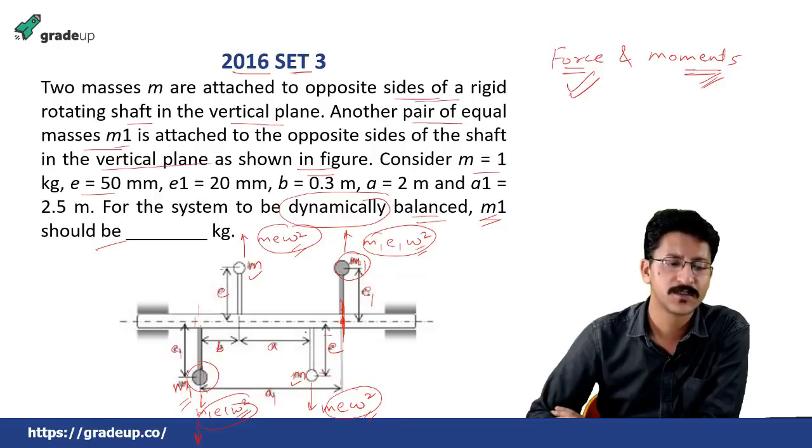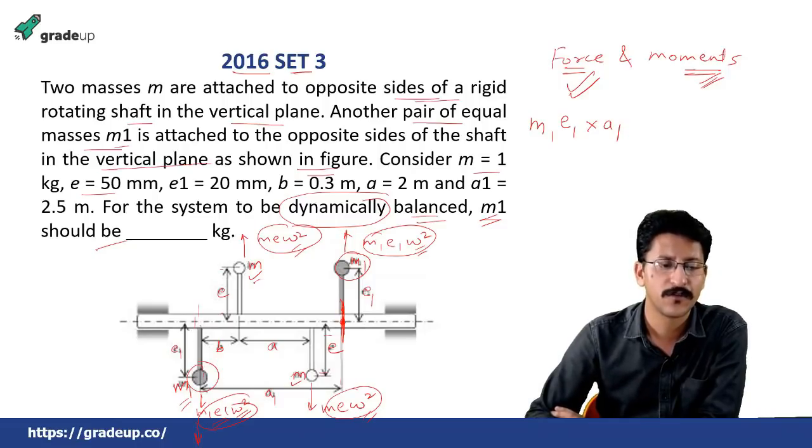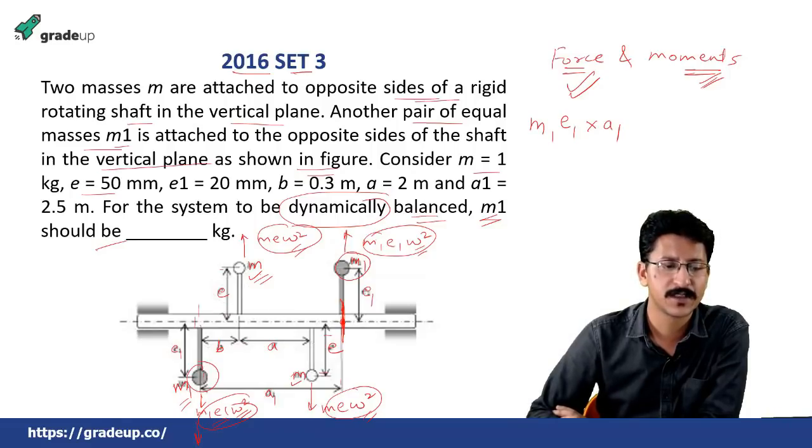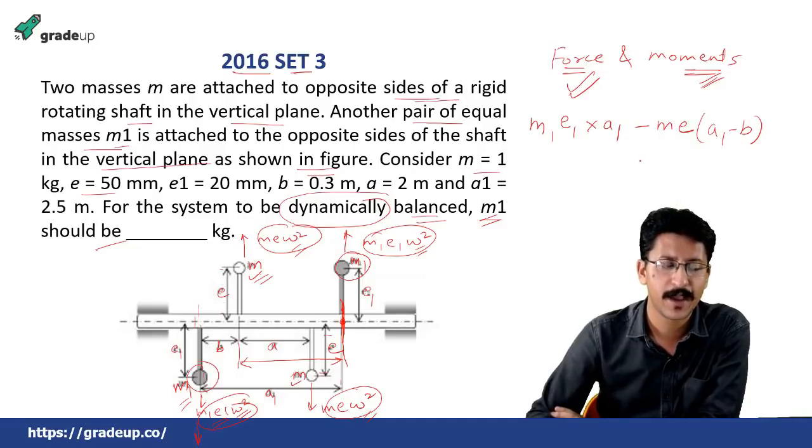So for the force consideration, we will just write m and e, means m1 e1 or m and e and then this distance for calculating the moments a, b or a1. So for first of all this force, this m1 e1, this will cause an anti-clockwise moment from, while taken from this axis. So m1 e1 into a1, this is along this side. Then the force which causes the moment for this, that is m into e and this will be equal to this distance. What will be this distance? From here till here. What will be this distance? This distance will be a1 minus b and this will be clockwise.